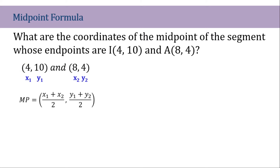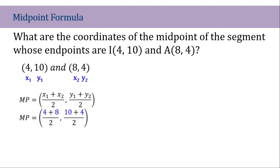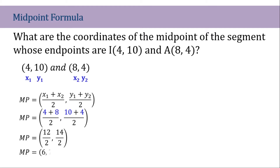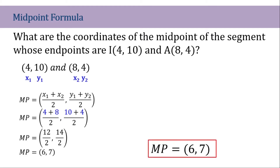Now let's write the midpoint formula and substitute all the values that we have. So 4 plus 8 all over 2, and 10 plus 4 all over 2. Let's simplify it: 4 plus 8 is 12 over 2, then 10 plus 4 is 14 over 2. Simplifying further, we have the midpoint as (6, 7).